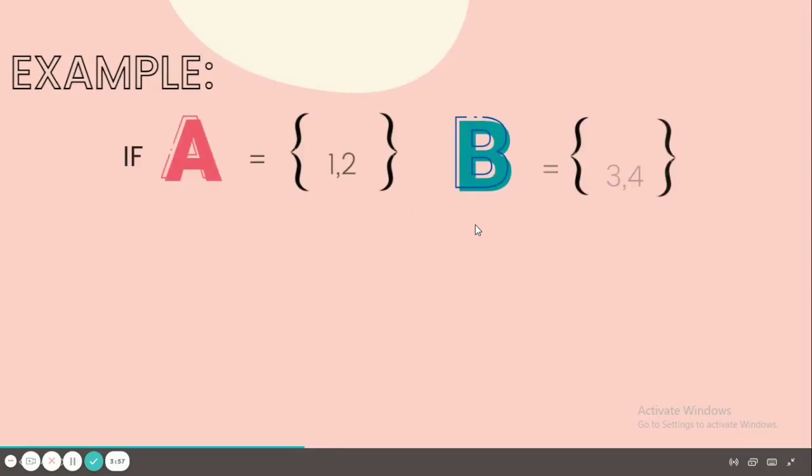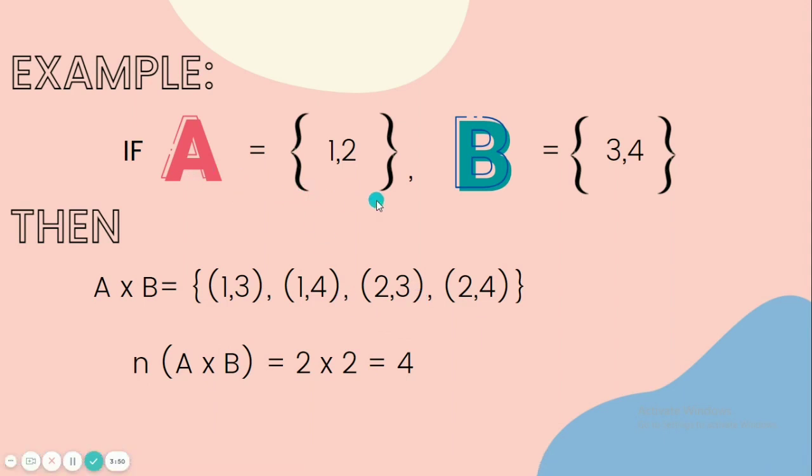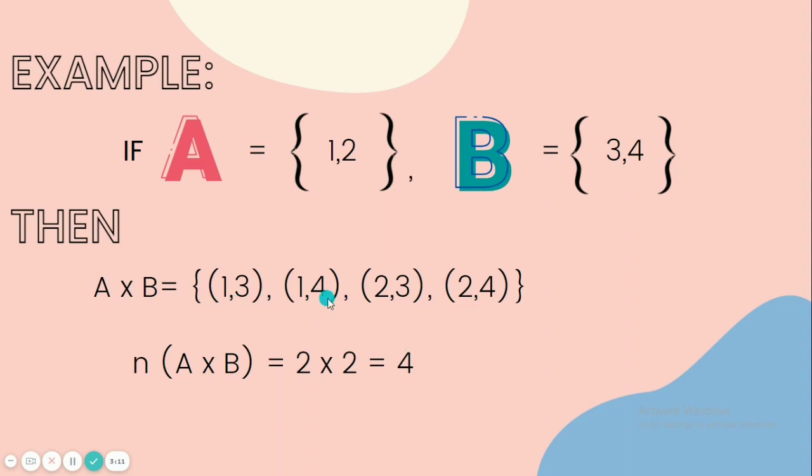For the first example, if set A contains elements 1 and 2, and set B contains elements 3 and 4, then the Cartesian Product of set A and B is {(1,3), (1,4), (2,3), (2,4)}. And since there are two elements in each set, we just multiply them to get the total ordered pairs. The total ordered pairs that we get are 4, which is correct because we have 4 ordered pairs for set A and B.